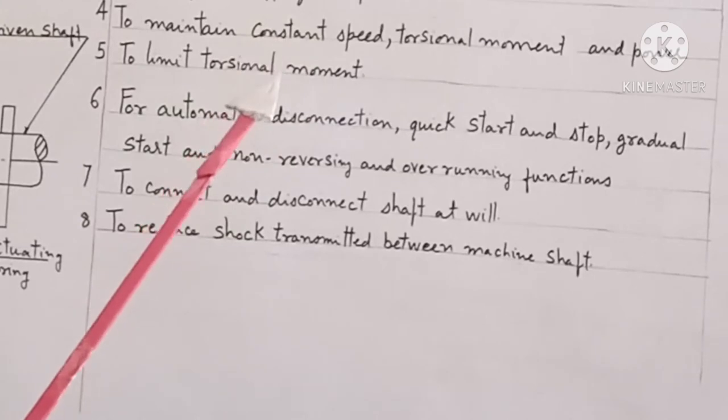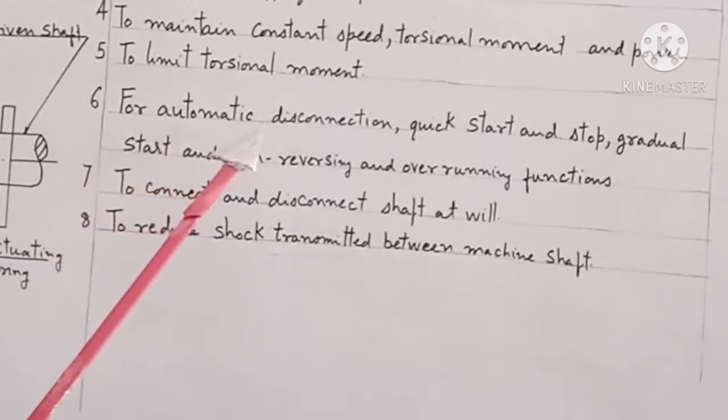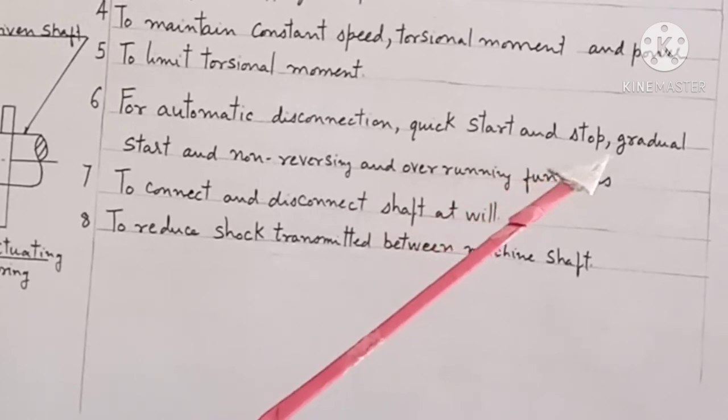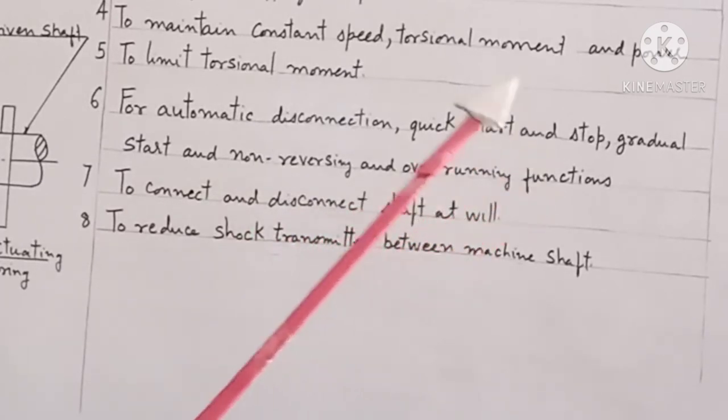Fifth, to limit torsional moment. Sixth, for automatic disconnection, quick start and stop, gradual start, and non-reversing and overrunning functions.